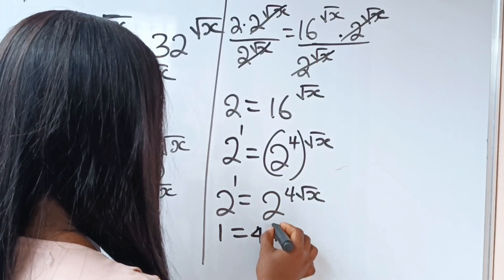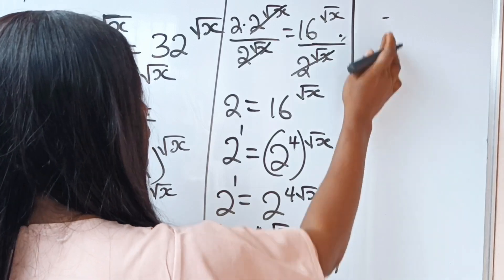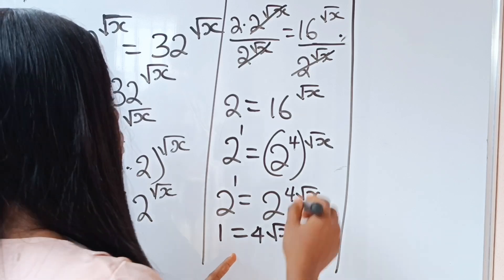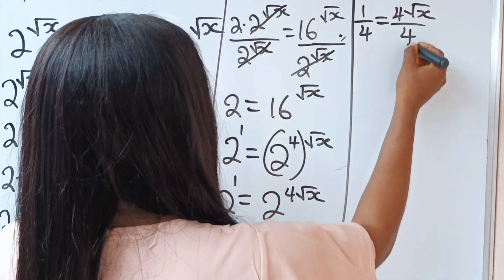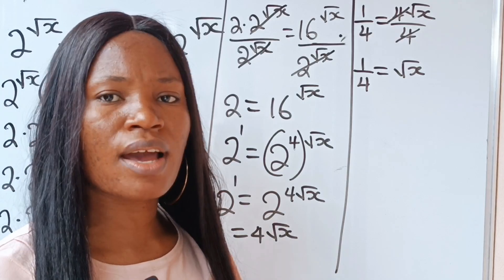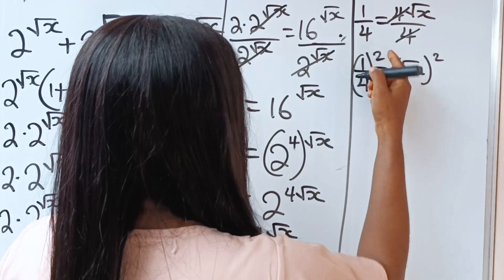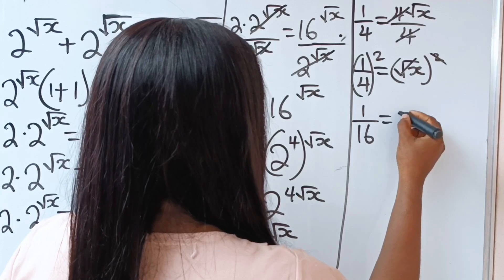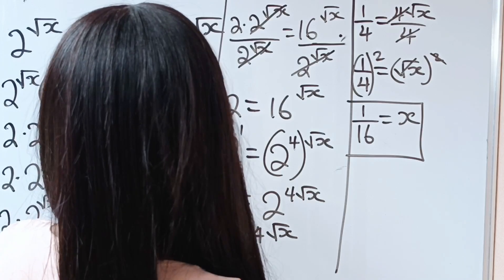Equating the exponents gives us 1 equals 4 root x. We divide both sides by 4, giving 1 over 4 equals root x. To find x, we square both sides: 1 squared over 4 squared gives us 1 over 16, so x equals 1 over 16.